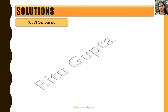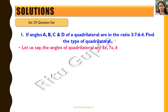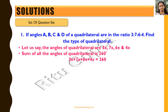Let's look at the solution for the first question. If angles A, B, C and D of a quadrilateral are in the ratio 3:7:6:4, find the type of quadrilateral. Let's say the angles of the quadrilateral are 3x, 7x, 6x and 4x. The sum of all angles of a quadrilateral is 360, so 3x + 7x + 6x + 4x = 360, which gives us 20x = 360, so x = 18 degrees.